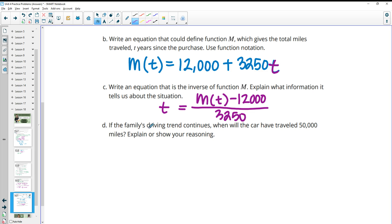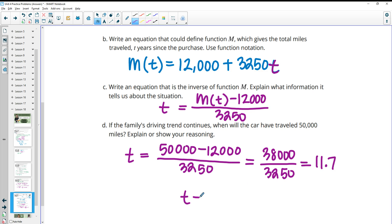If the family's driving trend continues, when will the car have traveled 50,000 miles? So now we know how much time it will take if we know we want 50,000 miles traveled. So we subtract off the initial 12,000 that they drove, and then we divide by the average that they drive in a year. So 50,000 minus 12,000 is that they've driven 38,000 miles, and we know they drive 3,250 per year. So if we divide that, we get like 11.7 years. So that's about 12 years it would take them to drive that many miles.